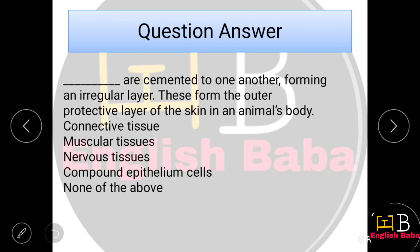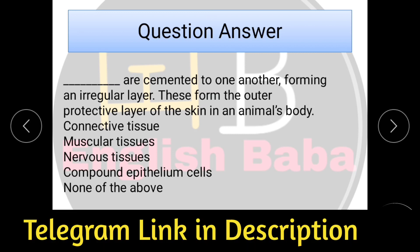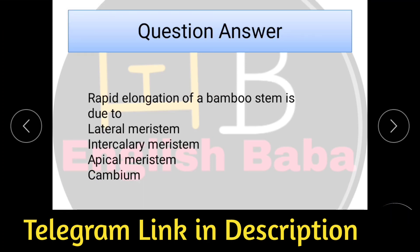Next question: Cells are cemented to one another forming an irregular layer — these form the outer protective layers of skin in an animal's body. Think about what tissue forms the outer protective skin layer. Next question: Rapid elongation of a bamboo stem is due to intercalary meristem. One meristem type is intercalary, and that is why bamboo stem can grow quickly. Option B is correct.